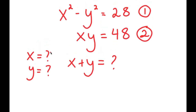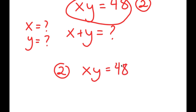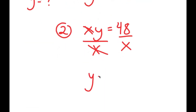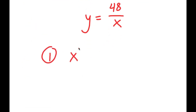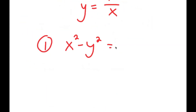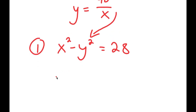I'm going to use equation 2, which is x times y equals 48, and solve for one variable in terms of the other. I'll solve for y by isolating it — dividing both sides by x — so I get y is equal to 48 over x. Using this, I can plug it back into equation 1: x squared minus y squared is equal to 28. Substituting y gives x squared minus 48 over x, all squared, is equal to 28.